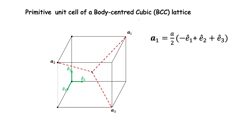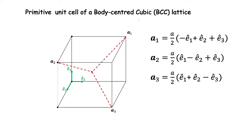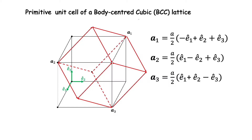Expressing them in the unit vectors e1, e2, e3 along the edges of the cube, we find a1 = (a/2)(−e1 + e2 + e3), with similar expressions for a2 and a3. These expressions are nicely symmetric: for a1, e1 is negative; for a2, e2 is negative; and for a3, e3 is negative. Completing the unit cell, we find the volume of this primitive unit cell as a³/2.